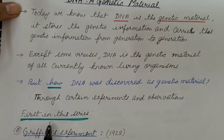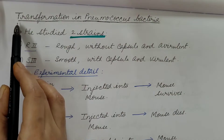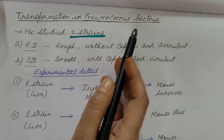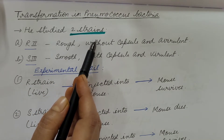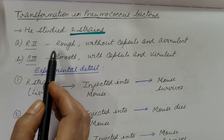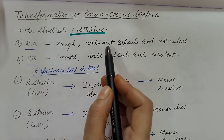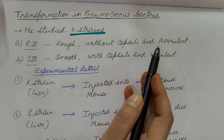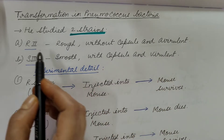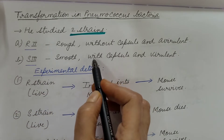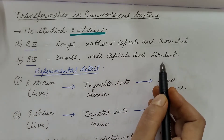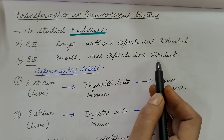In this series of experiments, the first is Griffith's experiment, which was performed in 1928. Griffith studied the transformation in Pneumococcus bacteria. He studied two strains of Pneumococcus bacteria. One is the R strain whose surface is rough, it is without a capsule, and it is avirulent — that means it does not cause disease. The second is the S strain whose surface is smooth, the capsule is present, and it is virulent — that means it causes disease, specifically pneumonia.